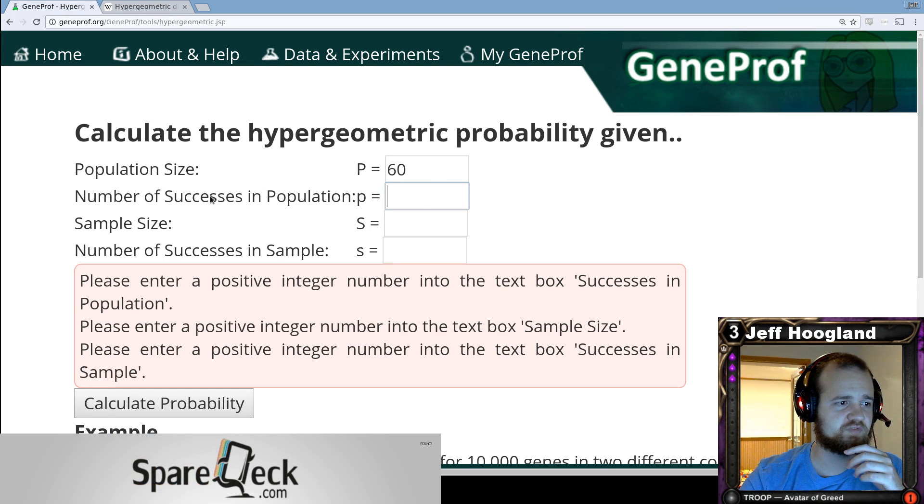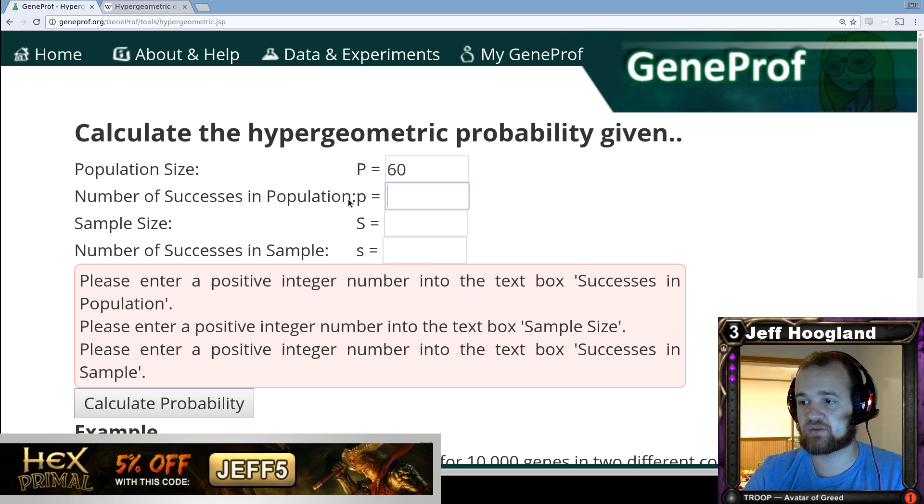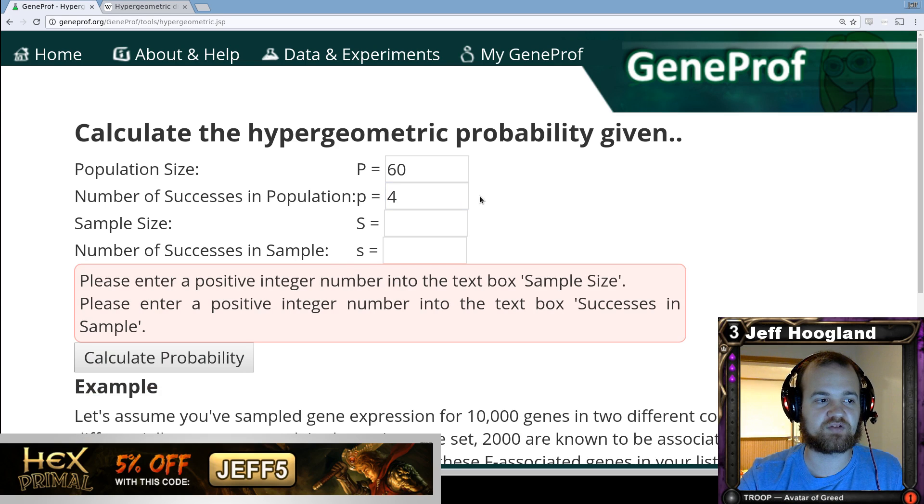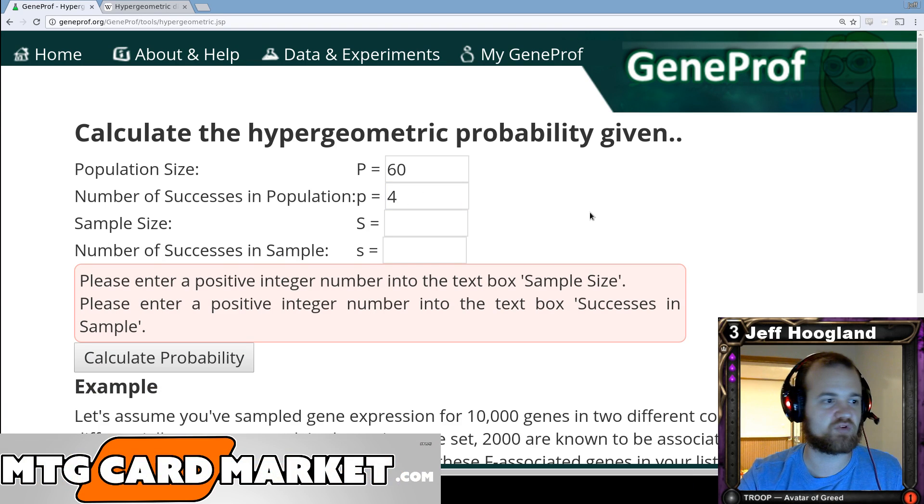The number of successes in population are the number of things you have in your deck that you're looking to draw. So for example, if we wanted to calculate the probability of drawing one of our four-ofs, we would put a four for the second argument in the calculator because we have four copies of this card we're looking to draw in our deck.